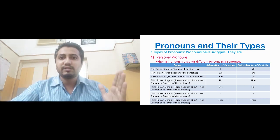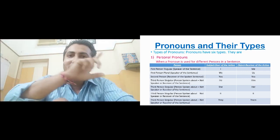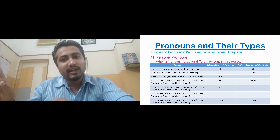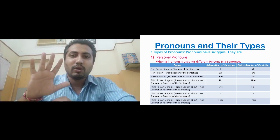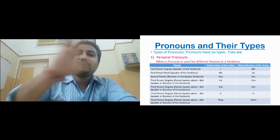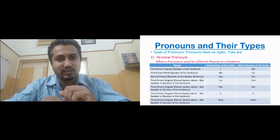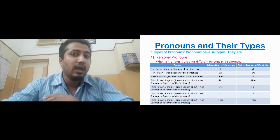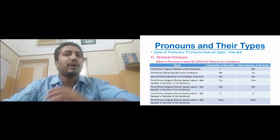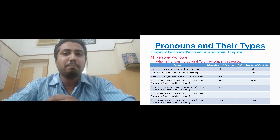We first need to understand these persons. There is a table with columns for person, subject (doer of the action), and object (receiver of the action). The table shows what the pronoun will be in subjective case and objective case for each person. A photo of this table will be sent to all students along with the video, and you must learn this table by heart.